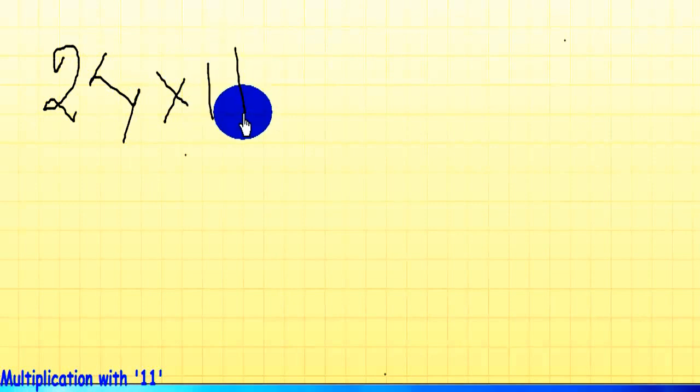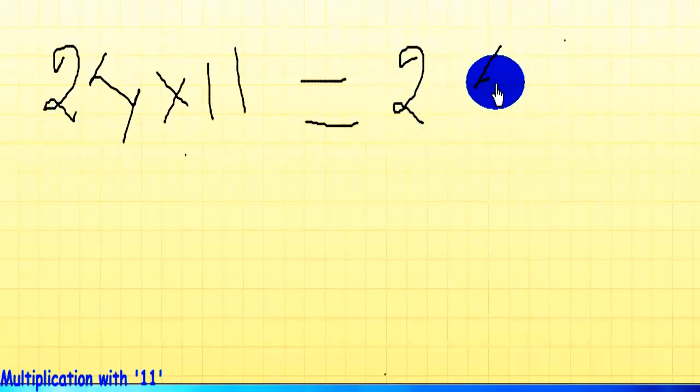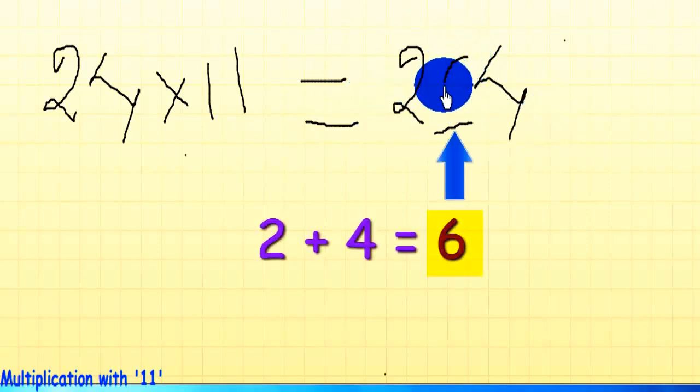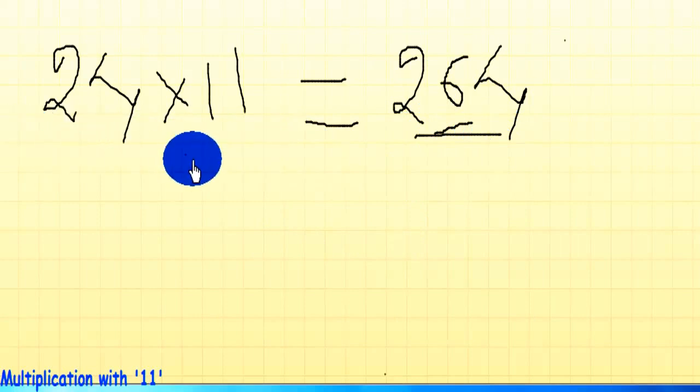So let's get started. Let's take a number, 24 times 11. Since it's a two-digit number, the answer is very simple. Just write these numbers as they are: 2 and 4, and in between these two digits write the sum of these two digits. 2 plus 4 is 6, so write this here. That's the answer: 24 times 11 is 264. Isn't that great? It's simple, easy, and fun.